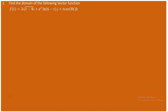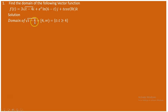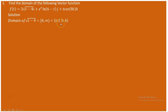First, the domain of √(t-4) is [4, ∞), because for the square root to be defined, the expression inside must be greater than or equal to zero. So t - 4 ≥ 0, meaning t ≥ 4. For any value of t greater than or equal to 4, the first i-component can be defined.